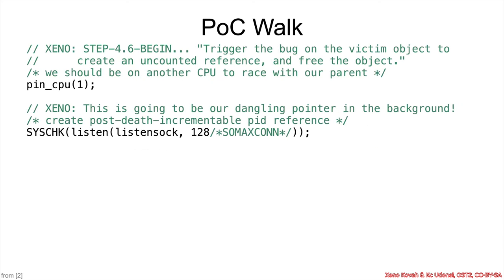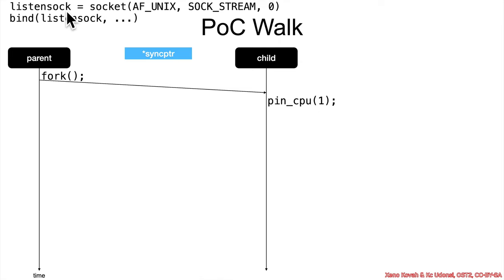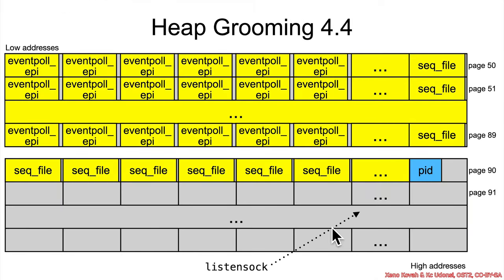Now the attacker wants to start the race, but to ensure it works most effectively, the child process must be on a different CPU from the parent — they want the actual multi-CPU, multi-processing race, not just a multi-threading race. The parent will be on CPU 0, the child on CPU 1. Then the child calls listen on the listen socket, which causes a reference in a kernel socket data structure pointing to the PID-T structure. Child pins itself to CPU 1 and calls listen on the socket — this is the important step that gives a reference which later becomes a dangling reference by the premature free.